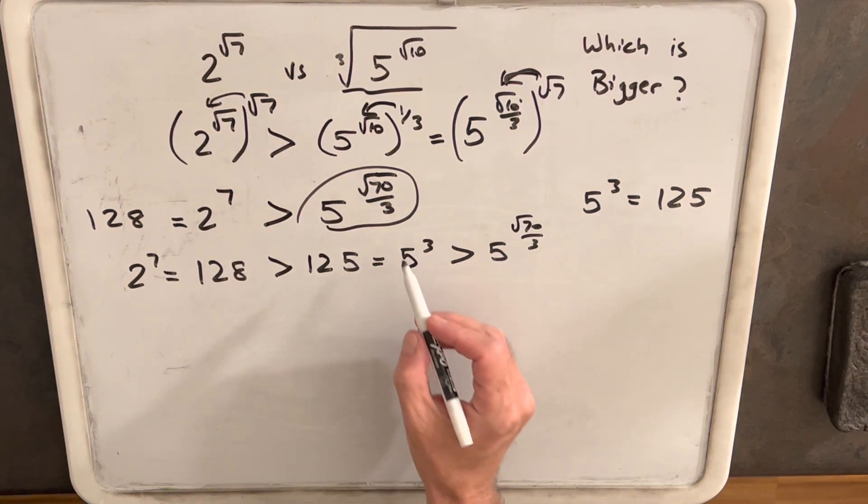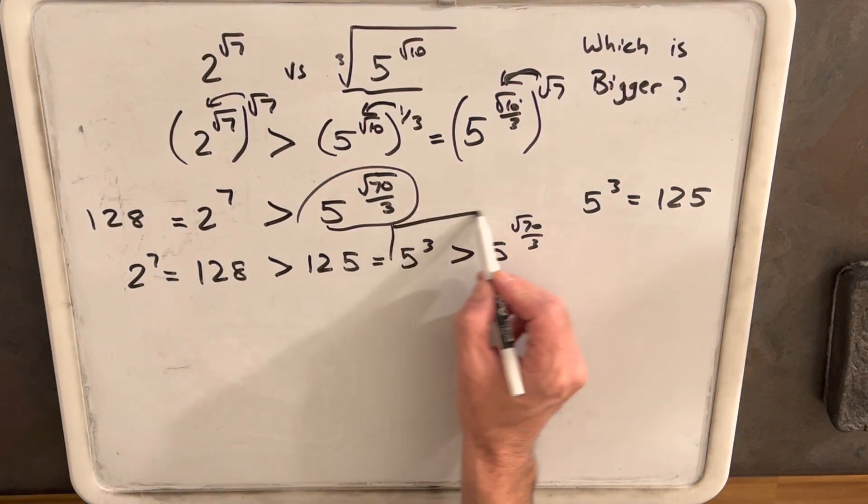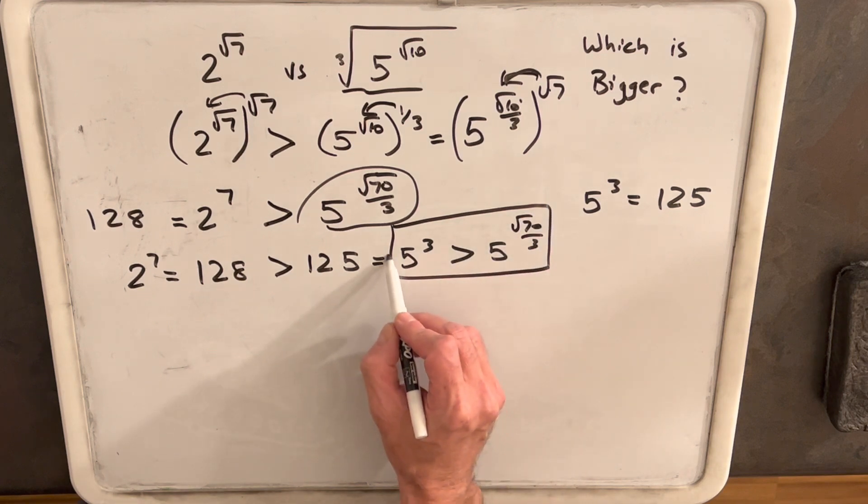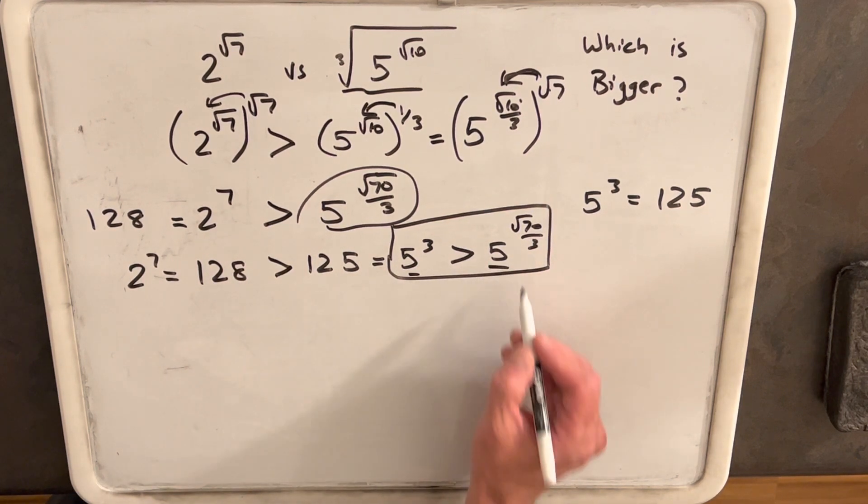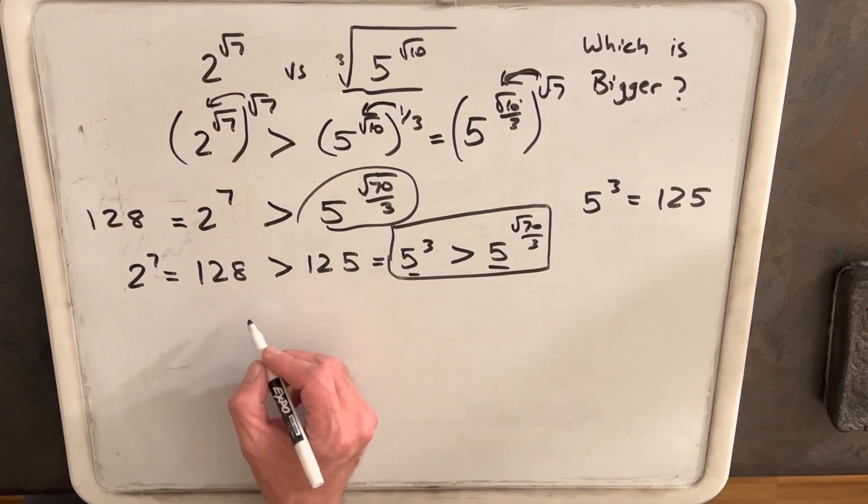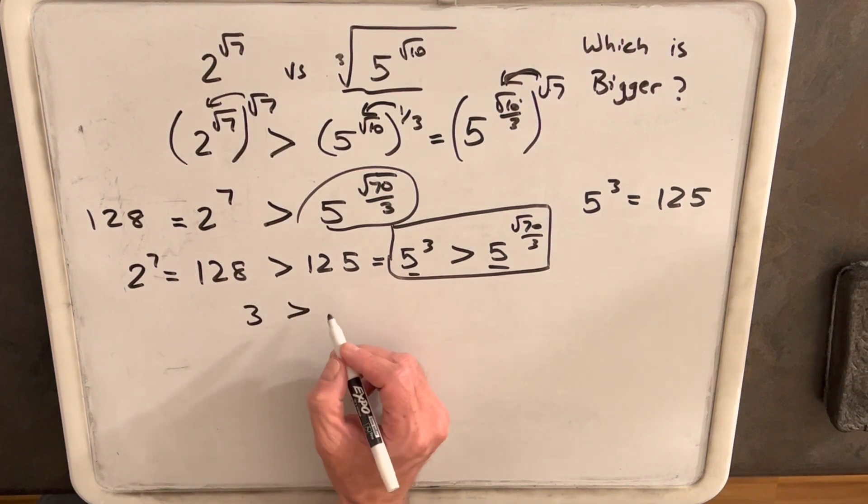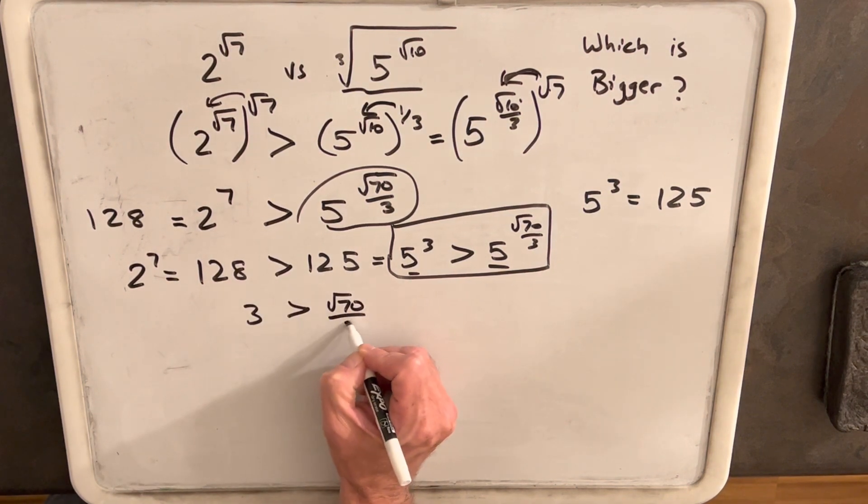And now the good thing about this is we've actually created a much simpler, which is bigger problem. We can compare these two. But because they have the same base of 5, we can just compare 3 to the square root of 70 over 3.